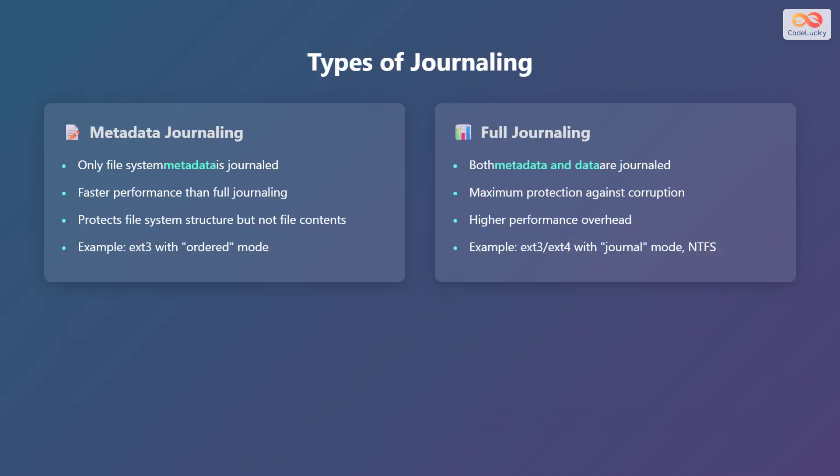There are mainly two types of journaling: metadata journaling and full journaling. In metadata journaling, only file system metadata is journaled. This approach offers faster performance compared to full journaling, but it only protects the file system structure and not the actual file contents. An example of this is the extended file system version 3, or ext3, with ordered mode.